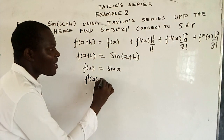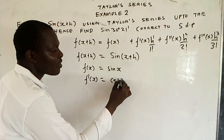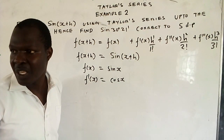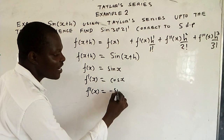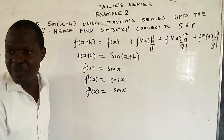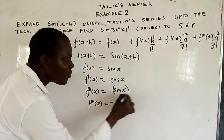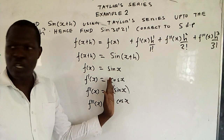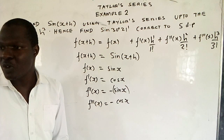We differentiate f of x for the first time to get f prime of x. If you differentiate sine x, you get cos x. Differentiating the inner function x gives just one, so you remain with cos x. Differentiate for the second time: differentiate cos x, you get negative. The inner function x gives one, so you remain with negative sine x. Differentiate for the third time: negative times derivative of sine x gives cos x, so you get negative cos x.